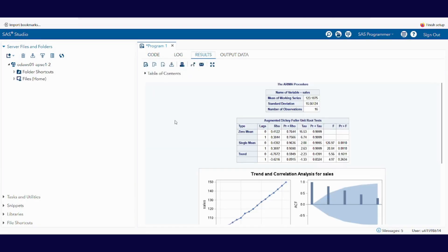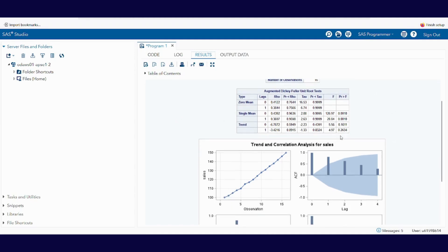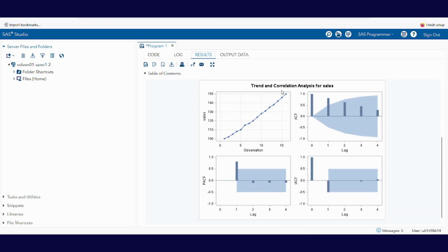Okay, this is the output results we got: Augmented Dickey-Fuller unit root tests and the graphs, trend and correlation analysis for sales. Let's interpret our output results.